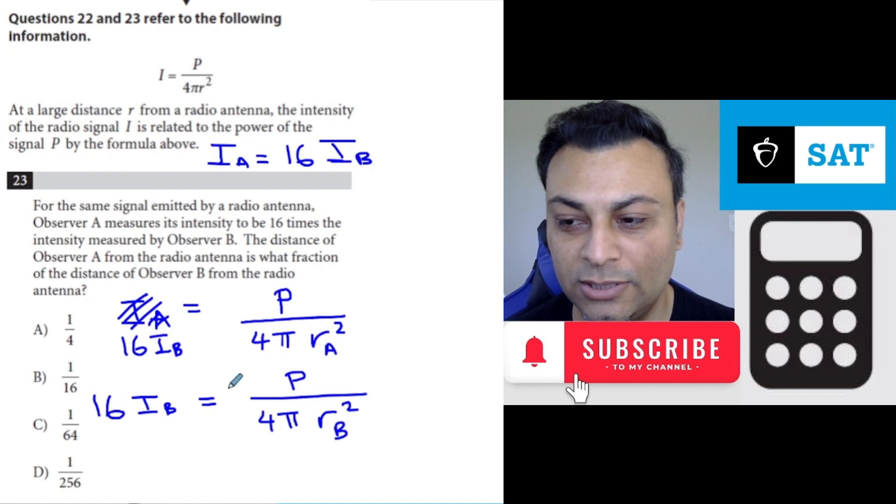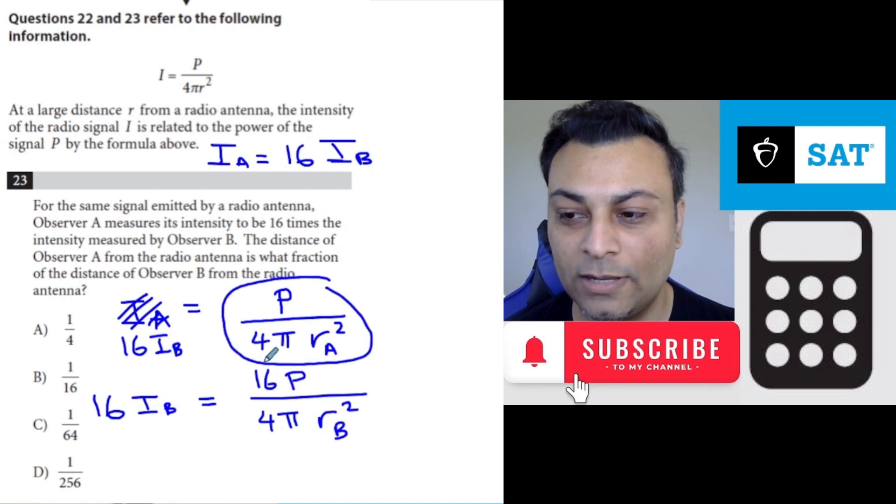One thing I could do is multiply this side by 16. So 16 here, 16 here, and I have 16 Ib. 16 Ib equals that, 16 Ib equals that. So these two are going to be equal to each other. Let's write that down over here.